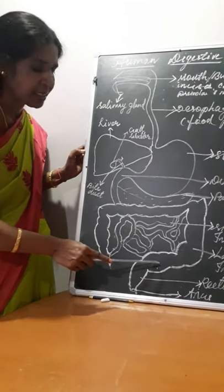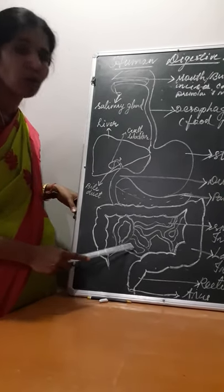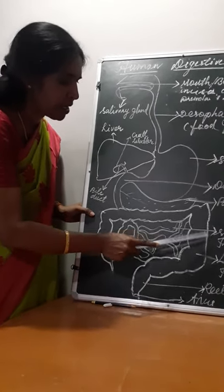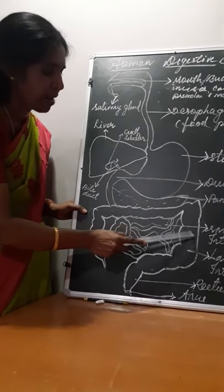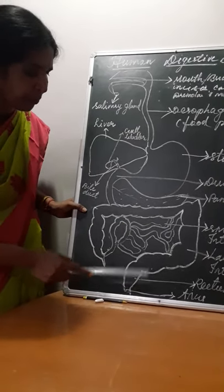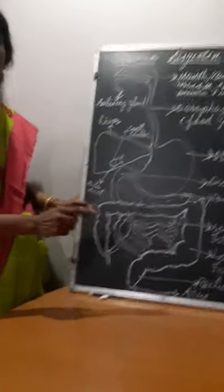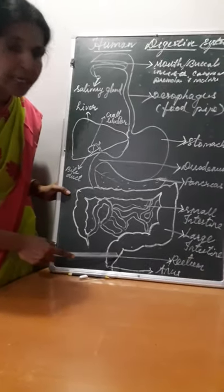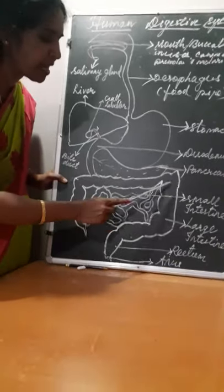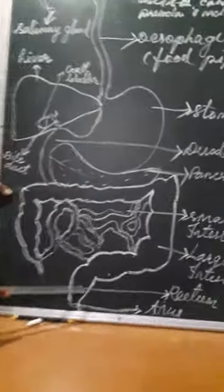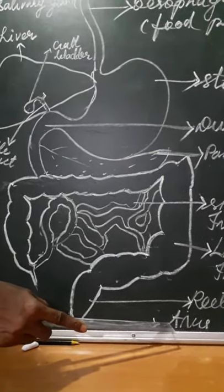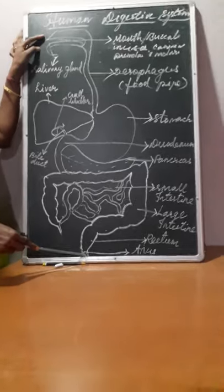The large intestine is shorter in length compared to the small intestine but has a wider diameter — that is why it is known as the large intestine. It has three parts: cecum, colon, and rectum. The rectum is the last part of the large intestine where undigested food materials are stored. Finally, the last part of the digestive system is the anus. So the alimentary canal starts from the mouth and ends at the anus.